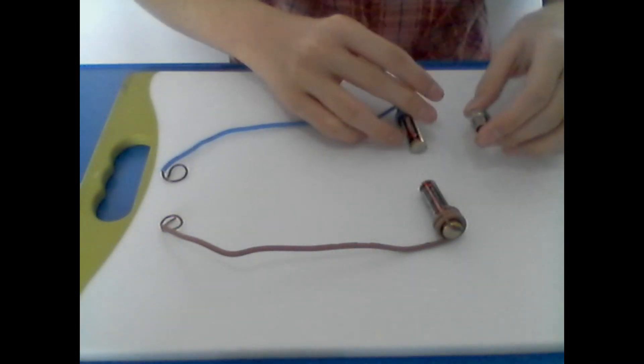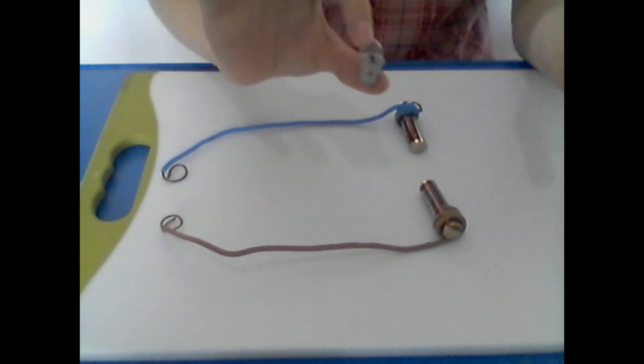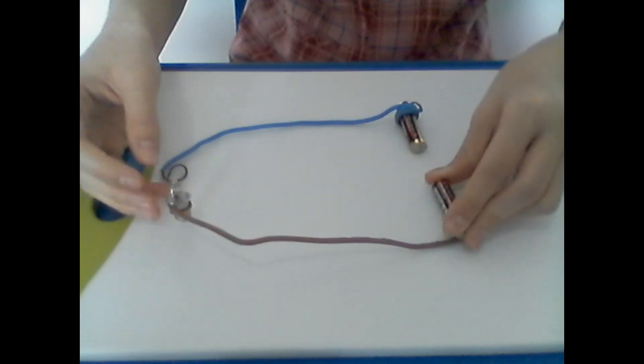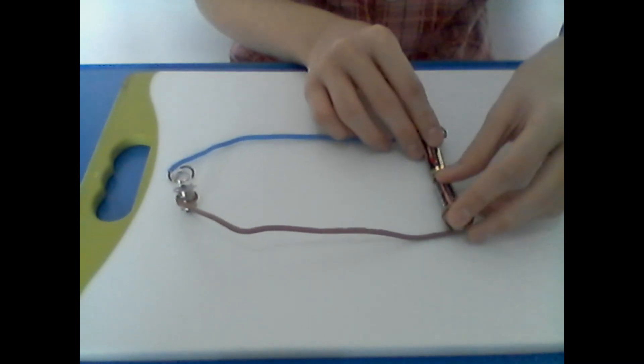Now, we put the light bulb in one of the edges of the wire in the other part. Then, we connect the wire.